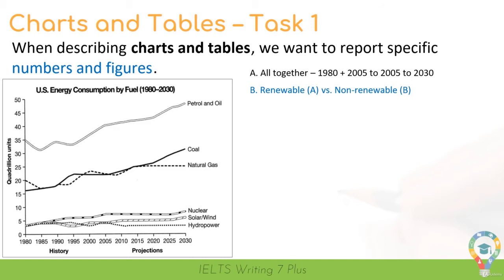What key features can you see in this line graph for the renewable energy sources? Pause the video and take a look at nuclear, solar, wind and hydropower. Think of two or three key features you could describe. What are the major trends? What are the big differences? What are the start and end points? Is there anything interesting to note? Pause the video now and have a quick look before I share my ideas for key features in group A.